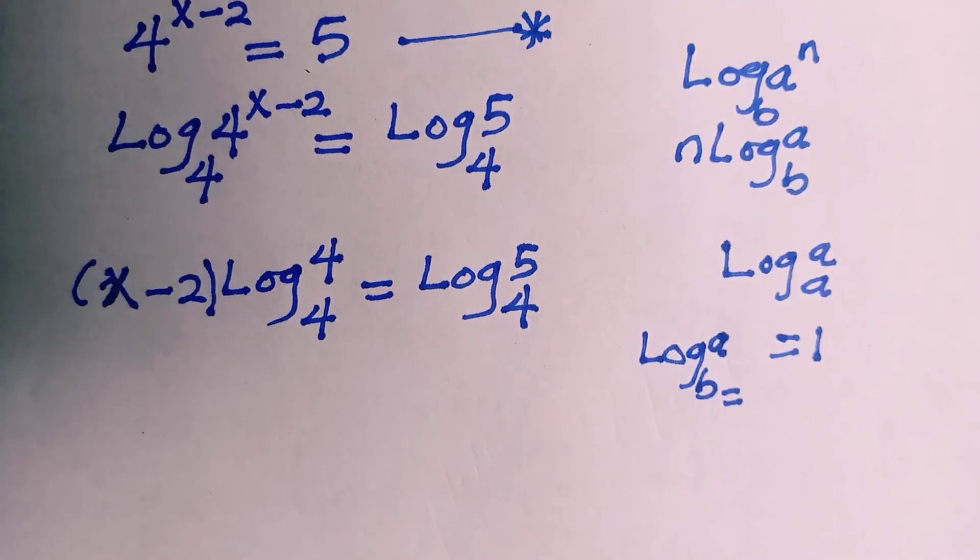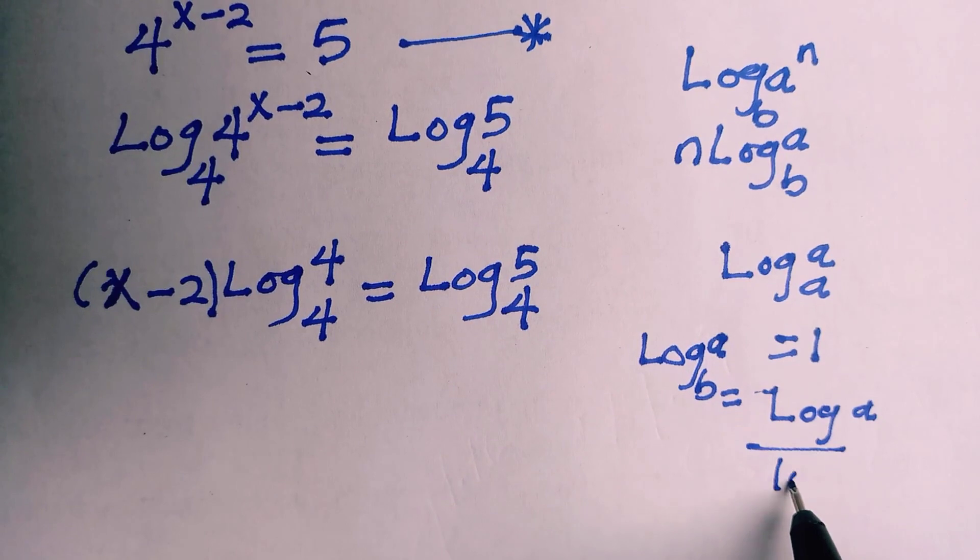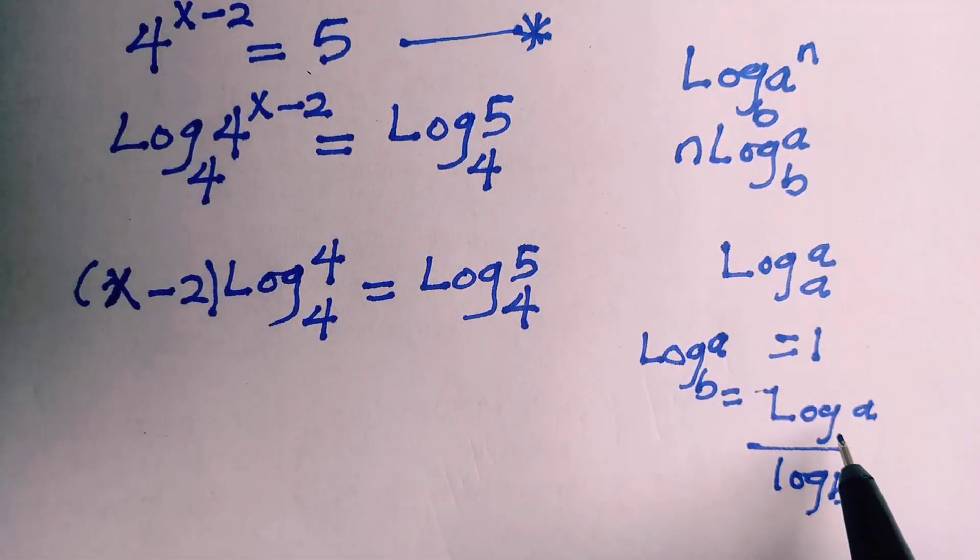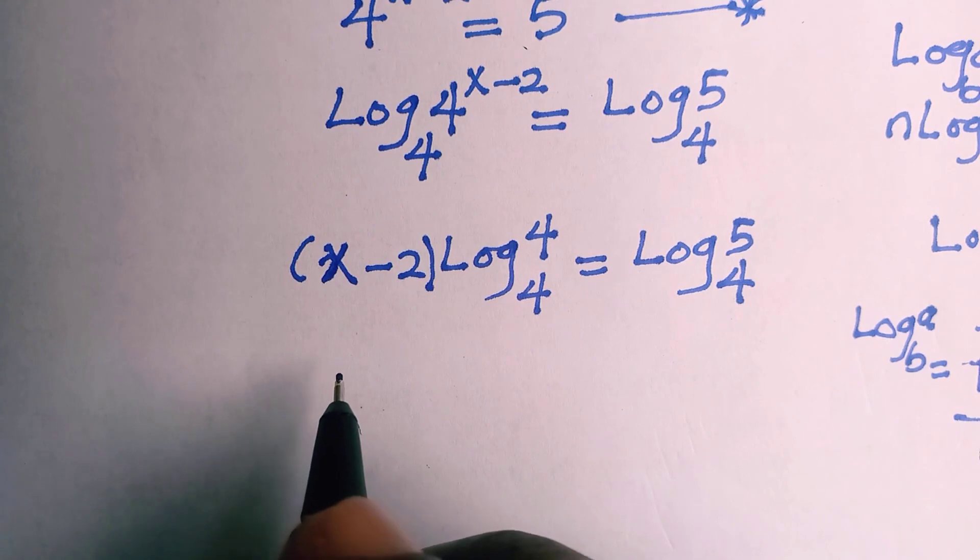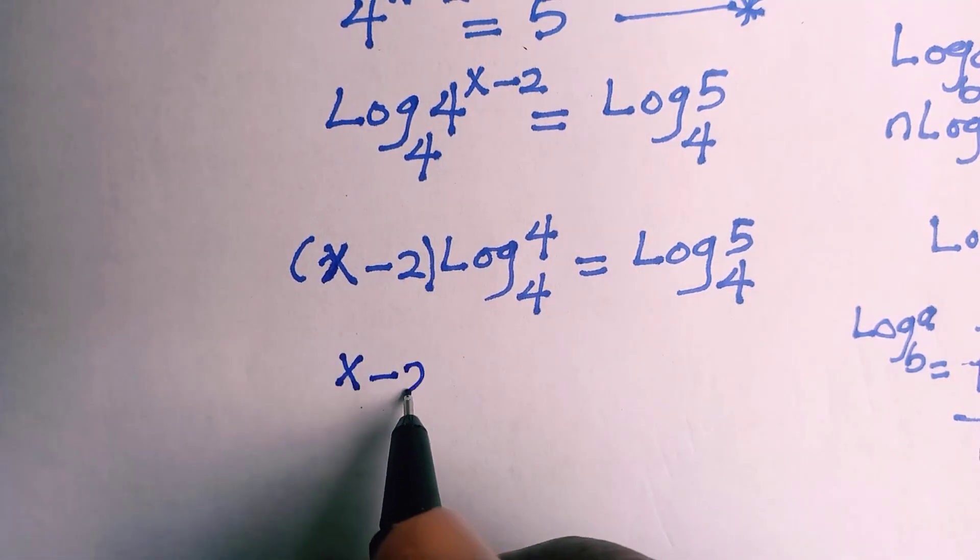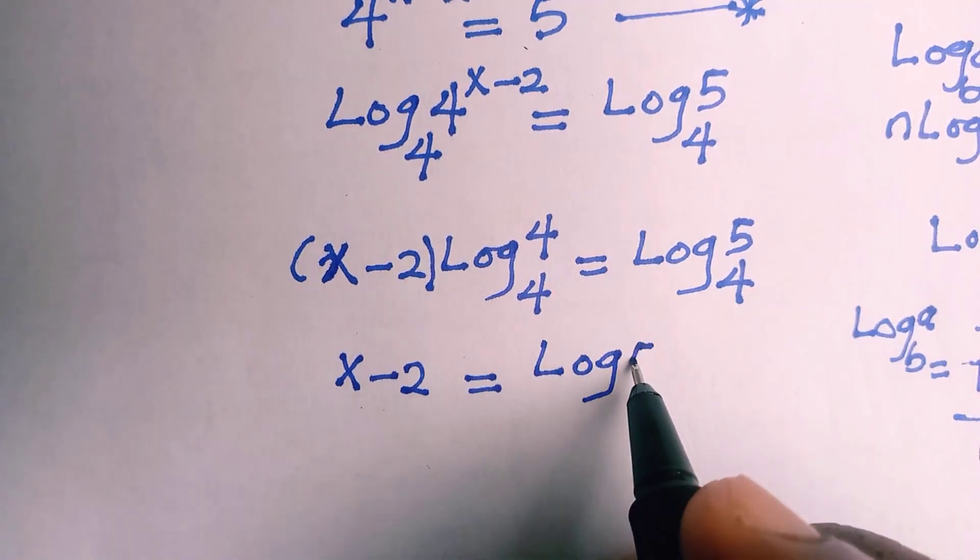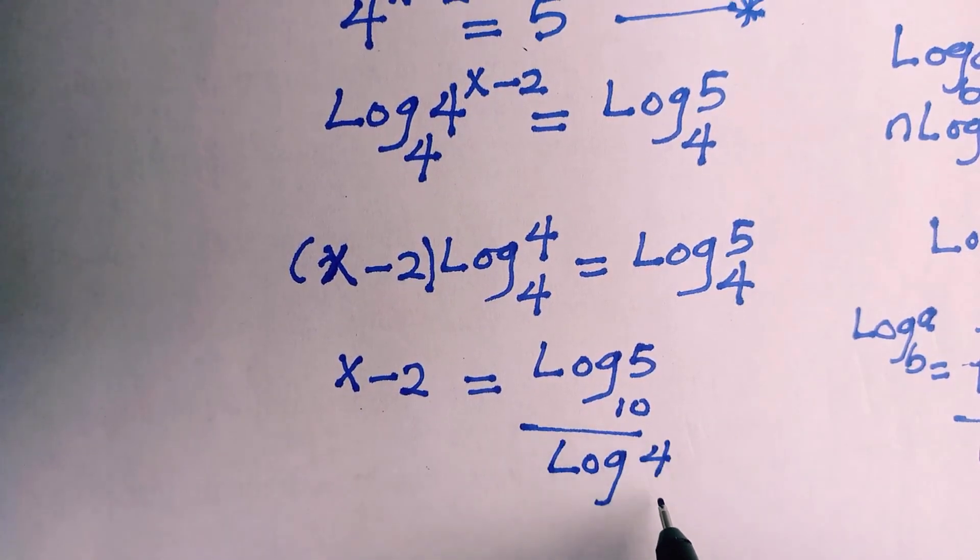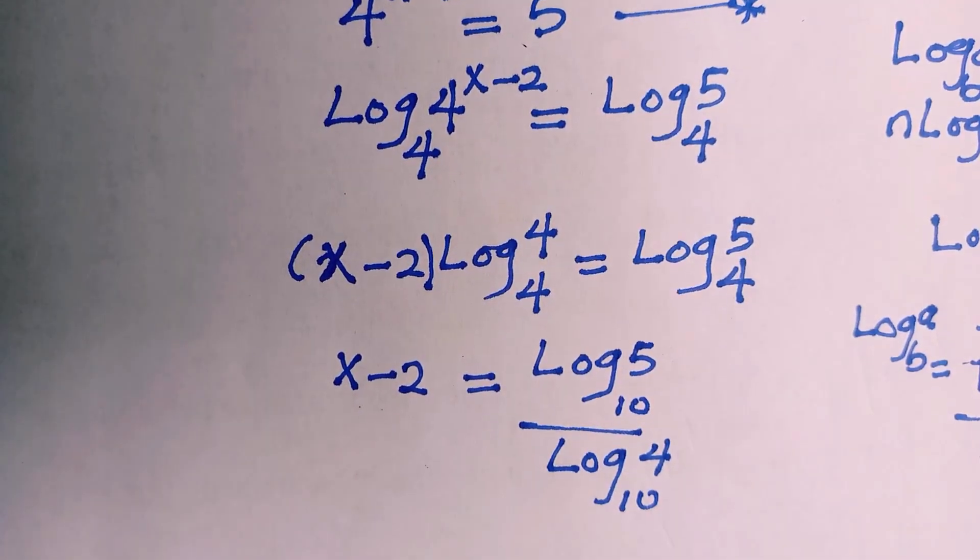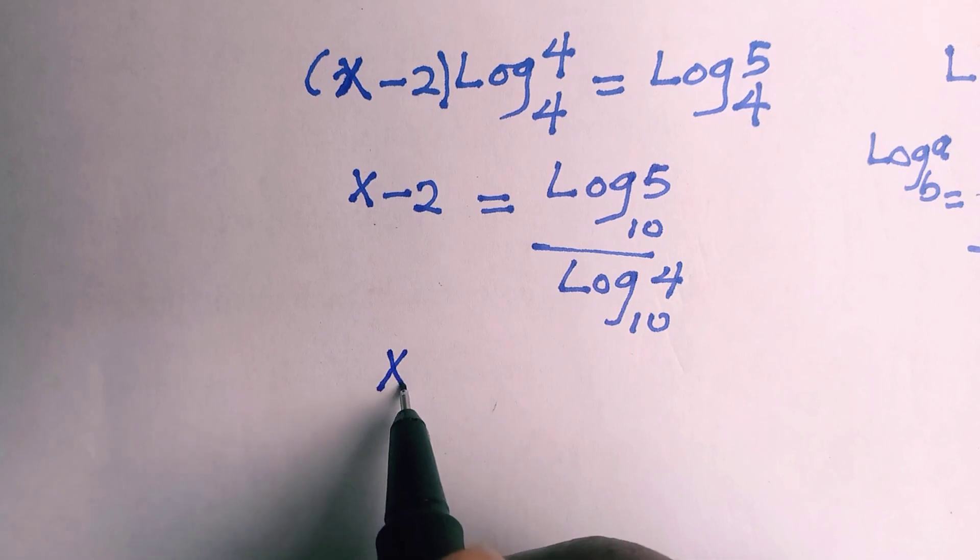I can make it in a quotient form of having log a separate and log b separate, and don't forget we have the common base 10 to them. Having done that, we have this result to be x minus 2 equals the log of 5 based on base 10 divided by the log of 4 base 10.